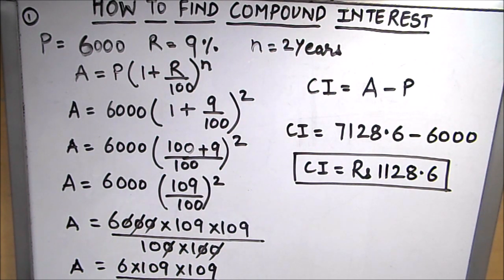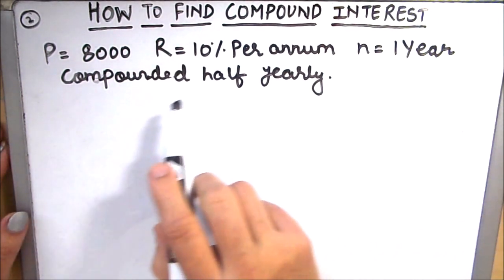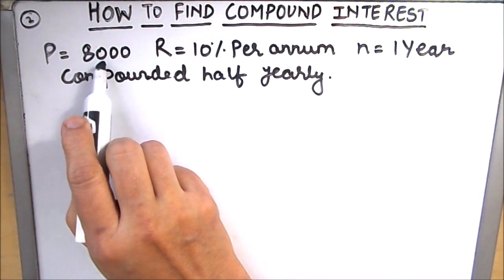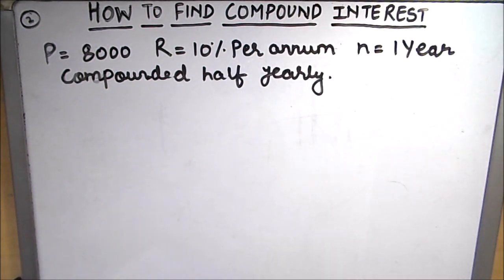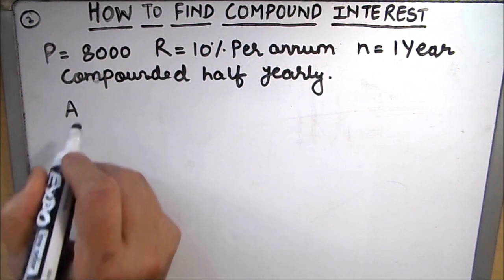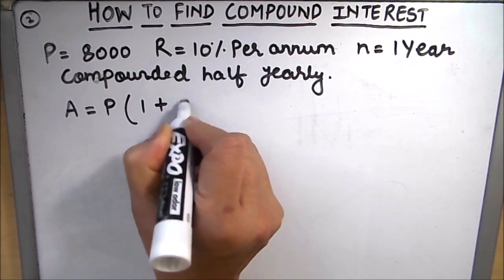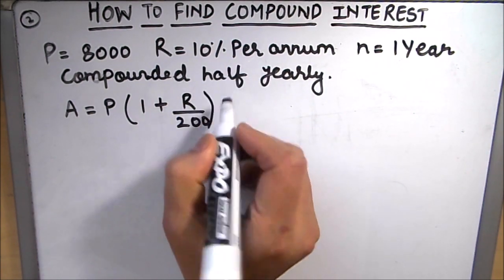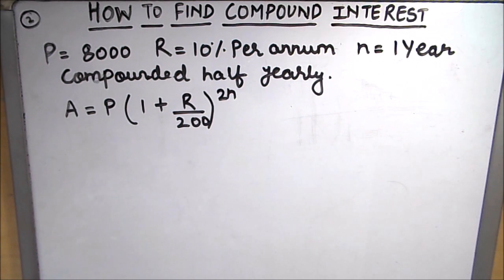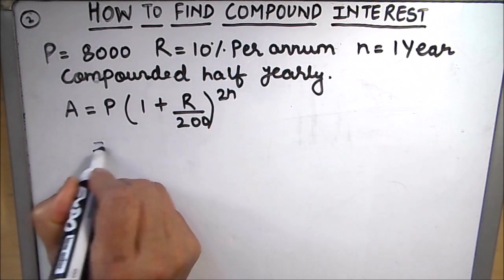Let's take one more example where the amount is compounded half yearly. In this second example, we have to find the compound interest when the principal is 8000 rupees at a rate of 10% per annum for one year, compounded half yearly. We will use the half-yearly formula: A equals P times 1 plus r over 200, raised to power 2n.